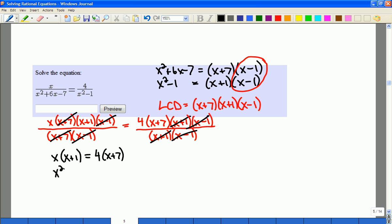So x squared plus x is 4x plus 28, and x squared minus 3x minus 28 equals 0.